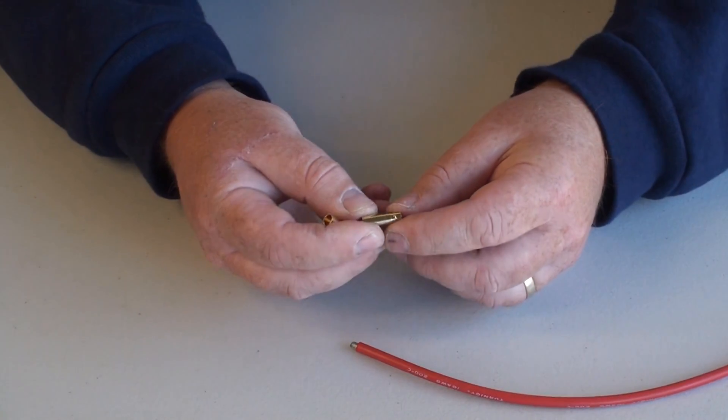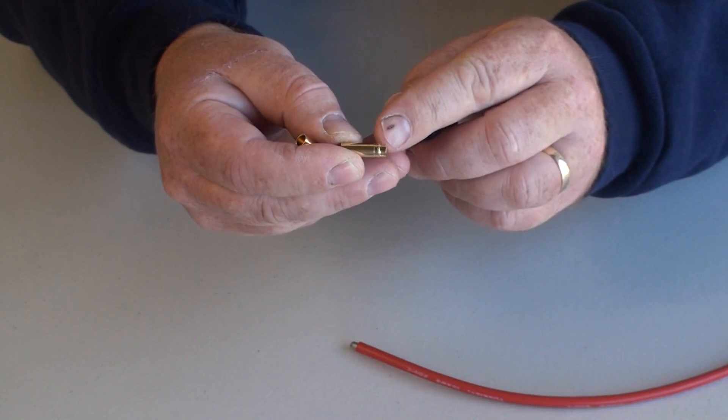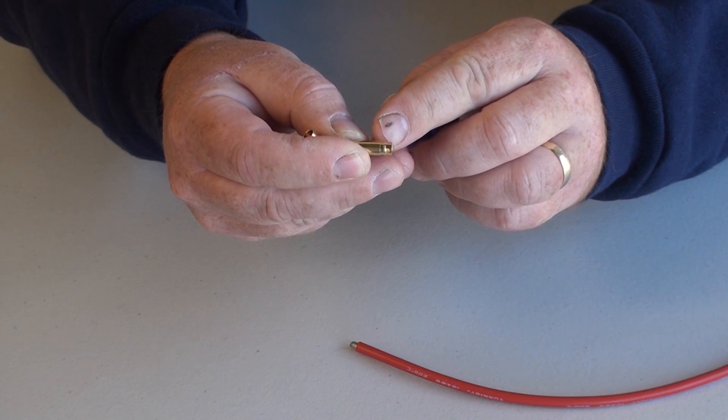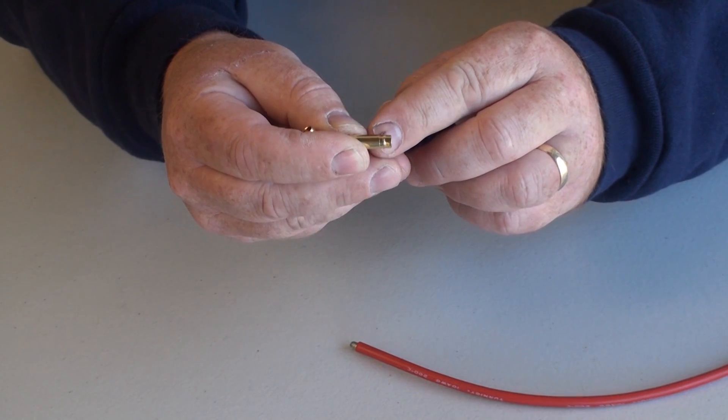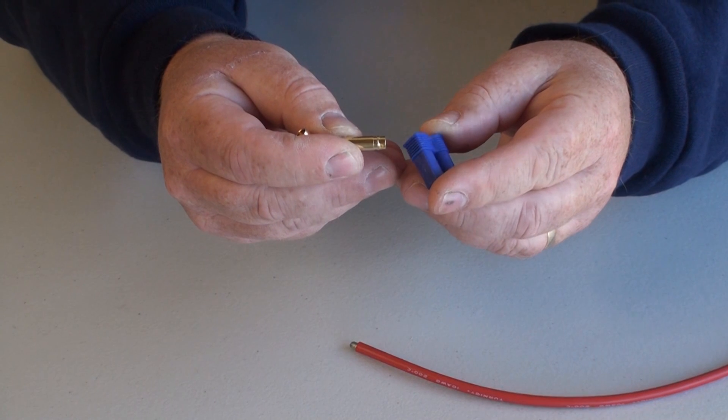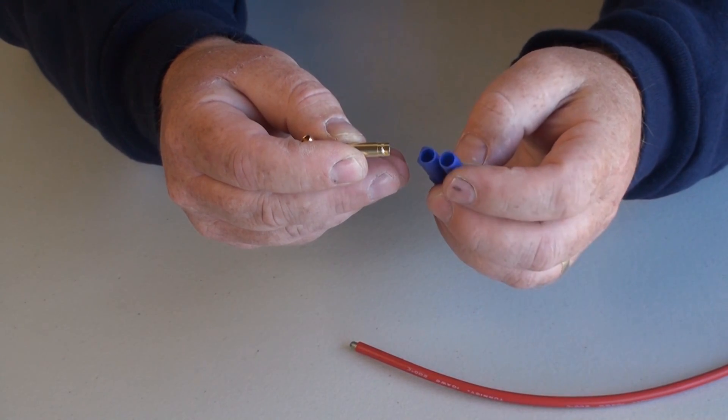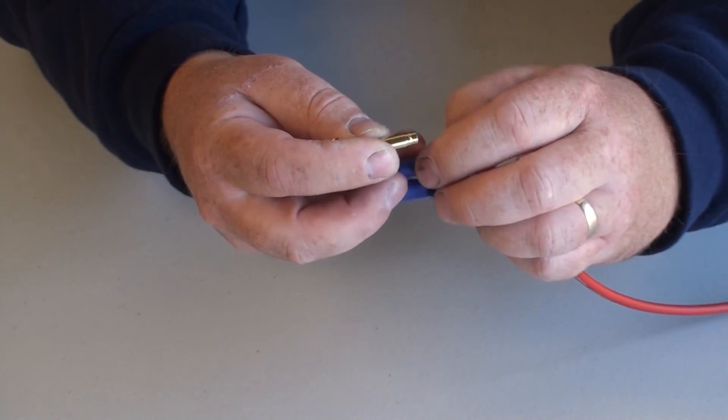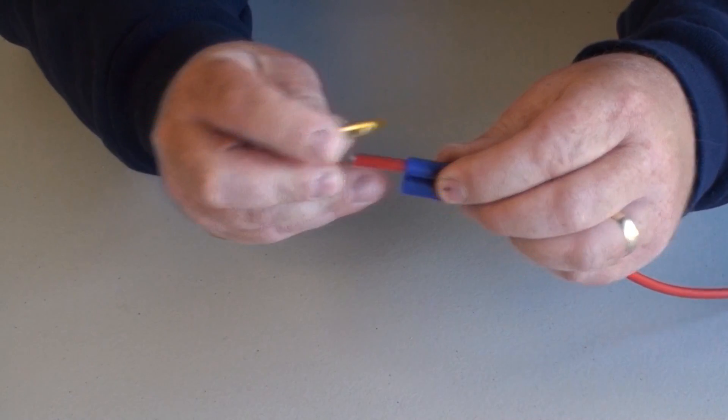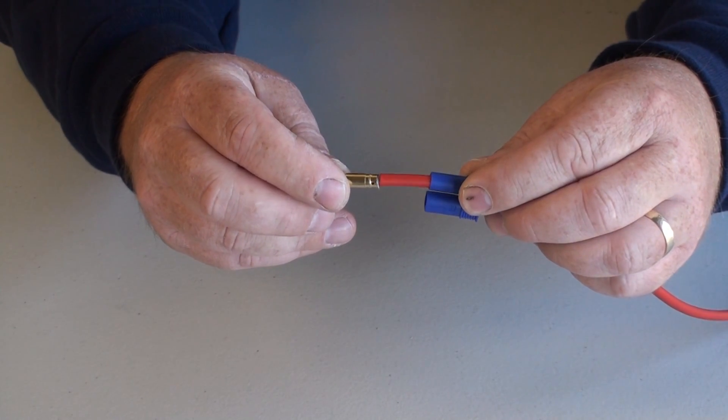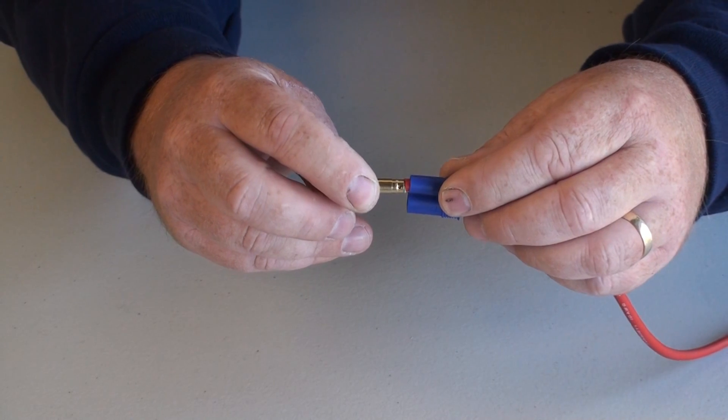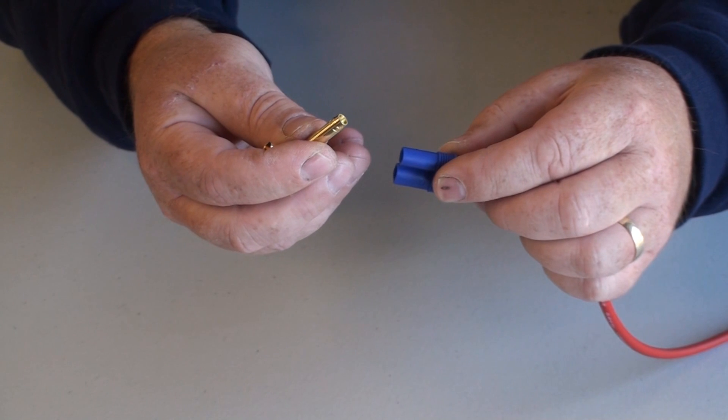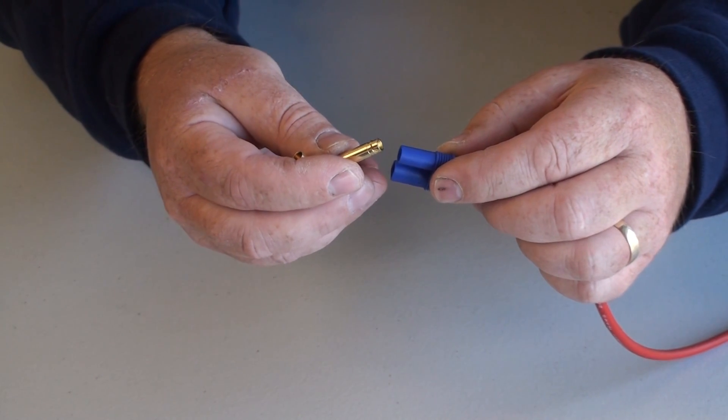Important things to note, the brass terminal has got a tapered flange to allow it to easily slip into the plastic protector. It's really important on these connectors that you feed the battery lead through the connector first, then solder on the brass terminal, and then simply pull it back through and you'll find that this will snap into place within the plastic connector. So I'm going to demonstrate that now.